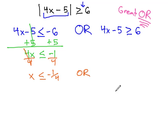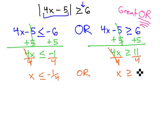Or, on the right half of this compound inequality, we can add 5 to both sides, giving us 4x is greater than or equal to 11, and finally dividing by 4, giving us x is greater than or equal to 11 fourths.